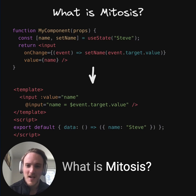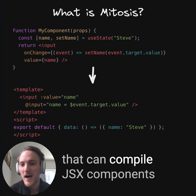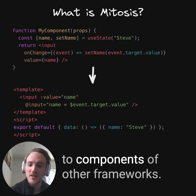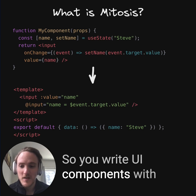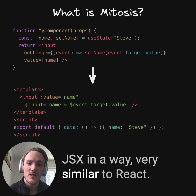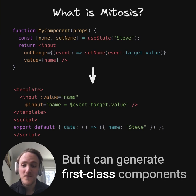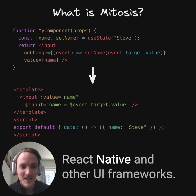What is Mitosis? Mitosis is an open-source project that can compile JSX components to components of other frameworks. So you write UI components with JSX in a way very similar to React, but it can generate first-class components for frameworks like Vue and Svelte, React Native, and other UI frameworks.